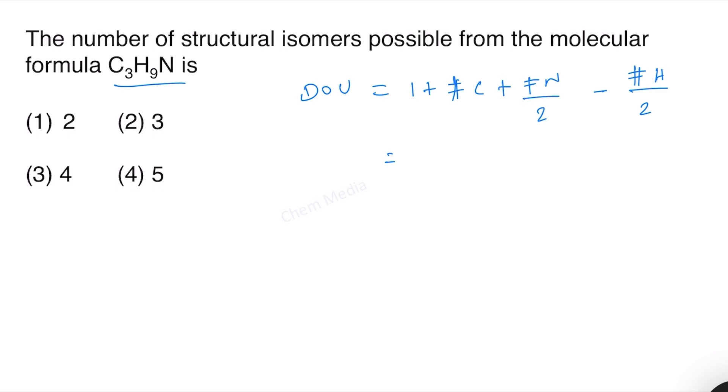In this case, 1 plus number of carbon atoms 3, number of nitrogen atoms 1, number of hydrogen atoms 9. Therefore, this is equal to 9 by 2 minus 9 by 2. Therefore, the degree of unsaturation in this case is 0. That means no double bonds or rings possible. It is a saturated elemental composition.